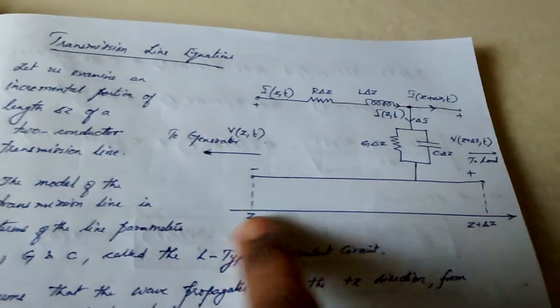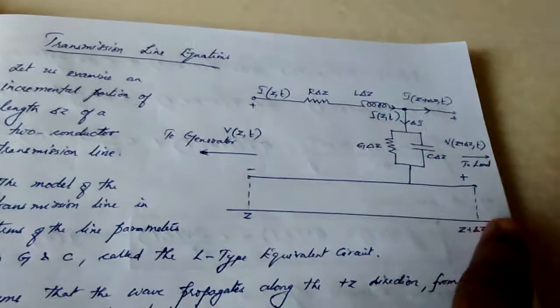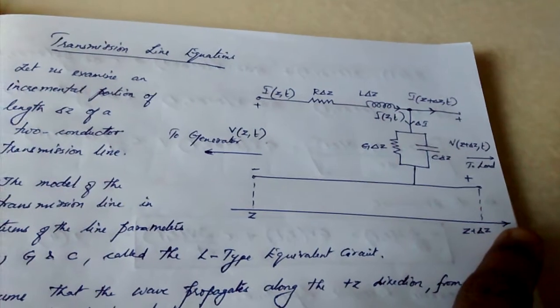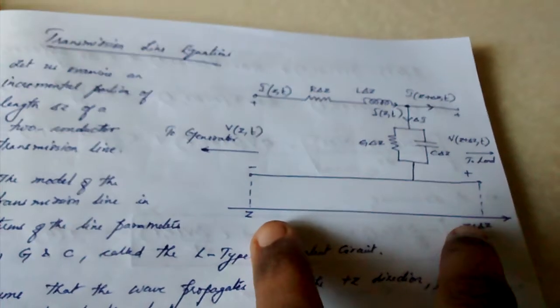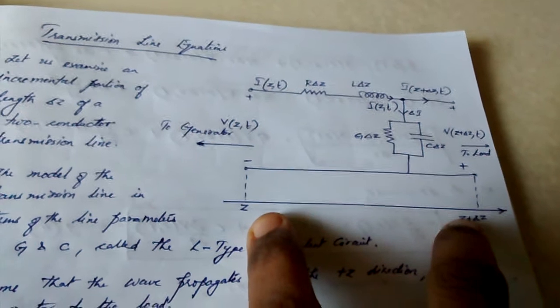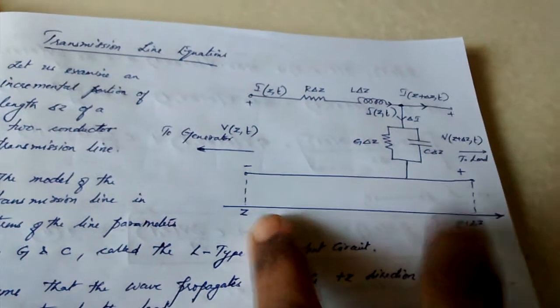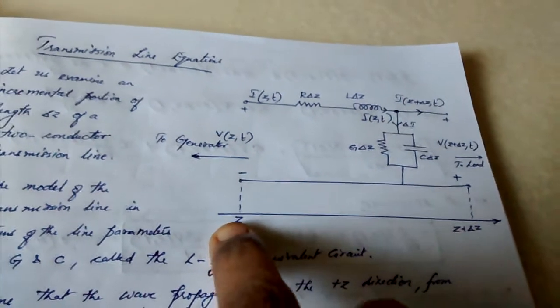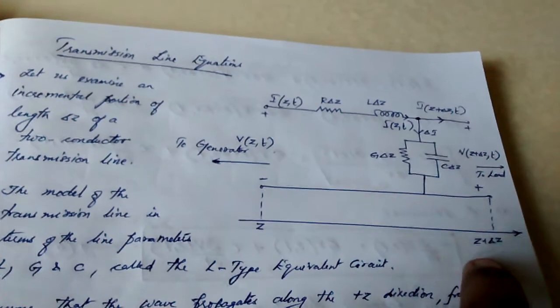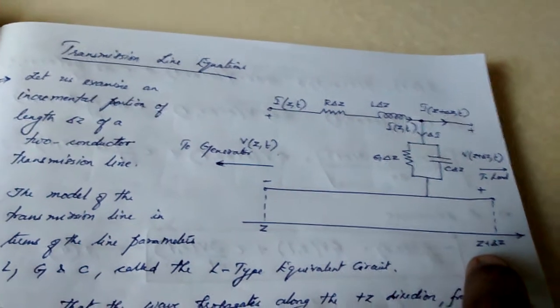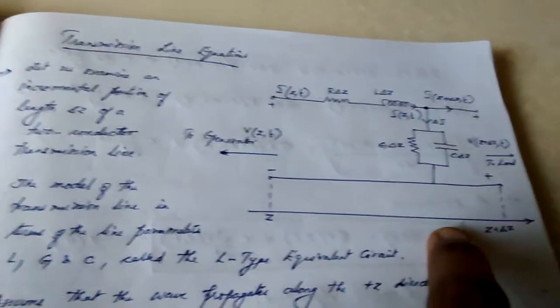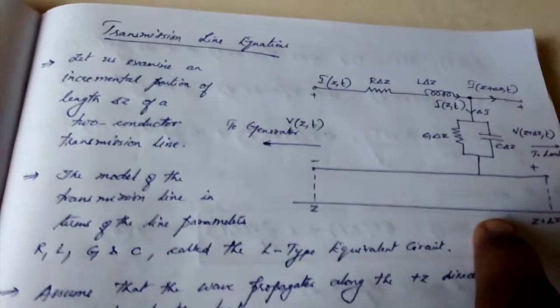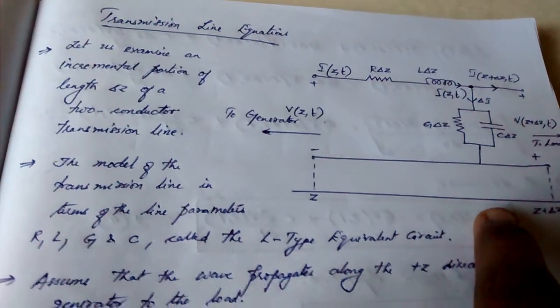The direction of propagation is along the z-axis. We are considering per unit length, an incremental length. So if this point is z, this will be z plus delta z. So delta z is the incremental length.